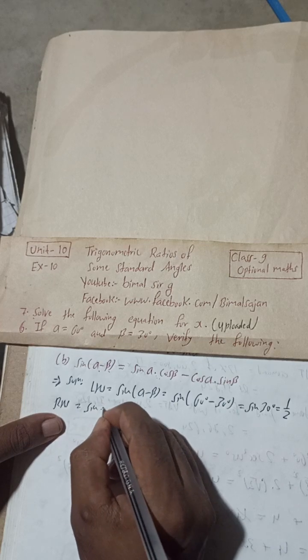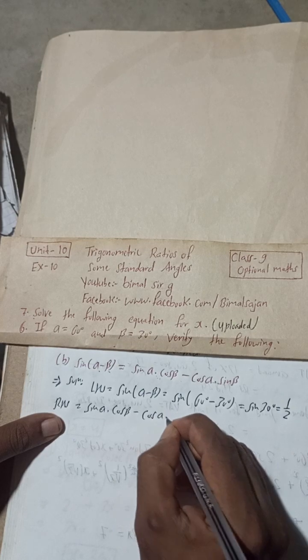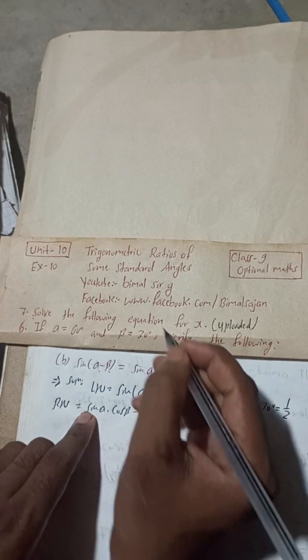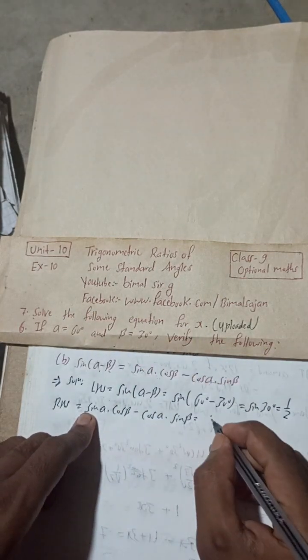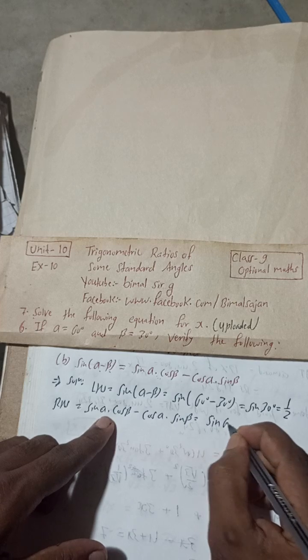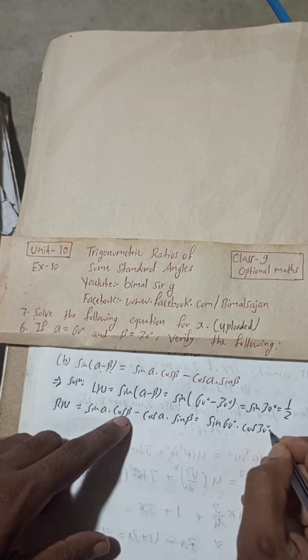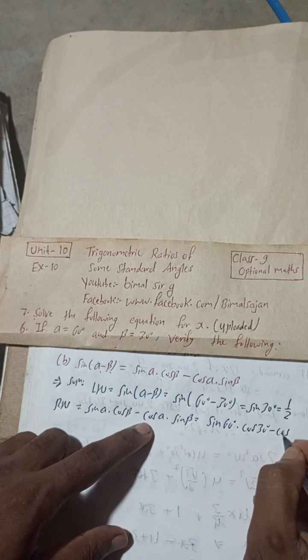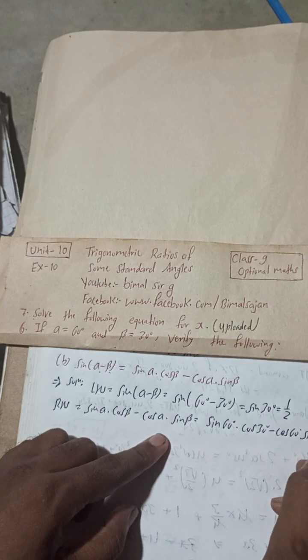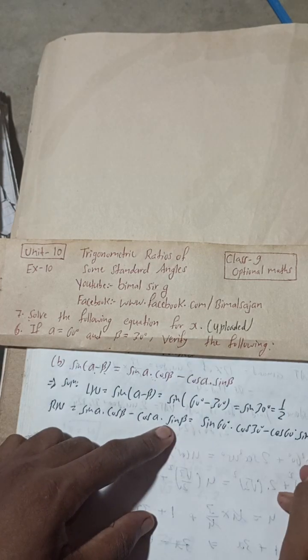This RHS is sine alpha cos beta minus cos alpha sine beta. So sine alpha means sine 60 degrees. If I put directly, it will be difficult I think. Sine alpha means sine 60 degrees, cos beta is cos 30 degrees, minus cos alpha, which is cos 60 degrees, into sine beta, which is sine 30 degrees.